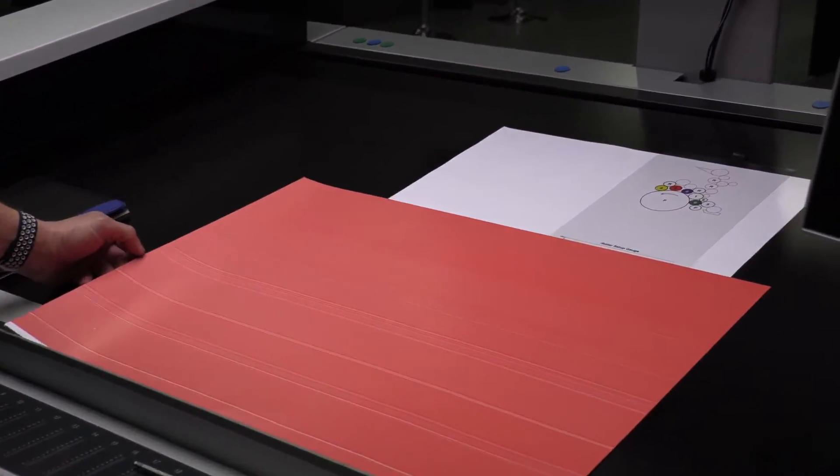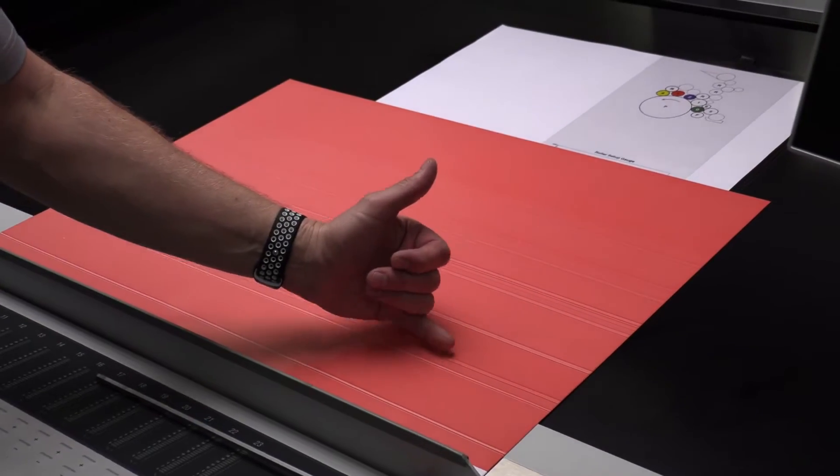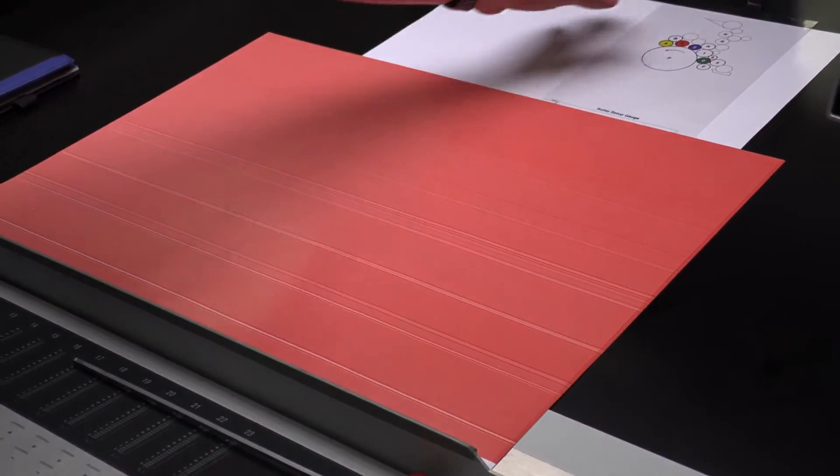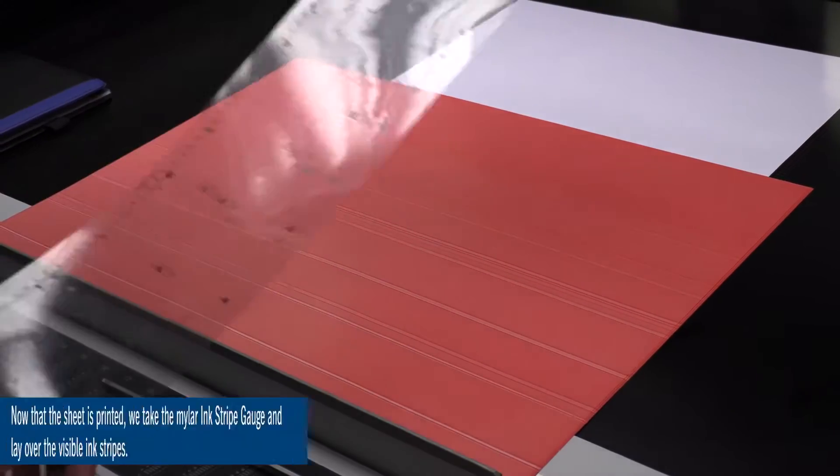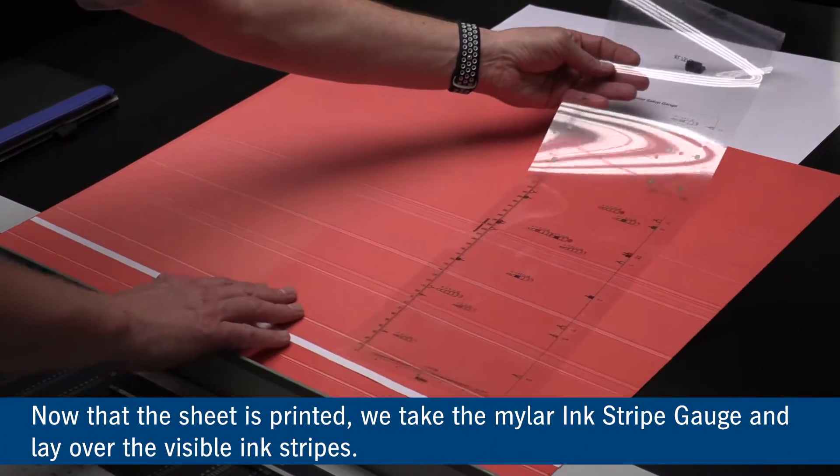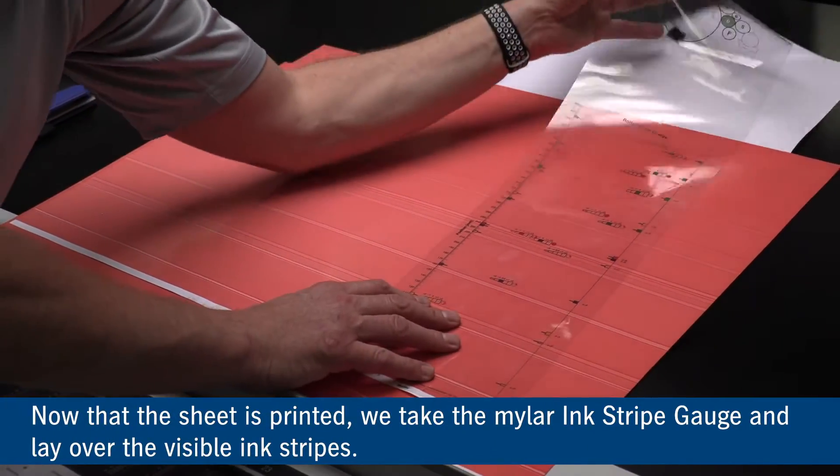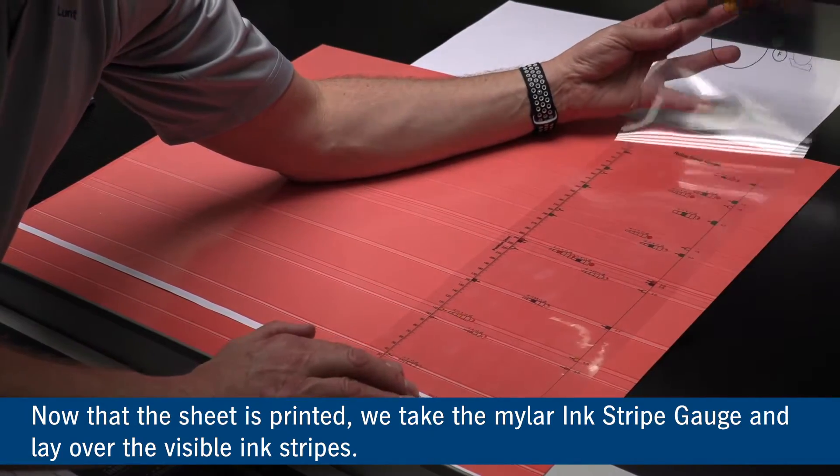We now have our printed sheet with our roller stripes on as you can see. With this mylar sheet we can now check the inking stripes on the actual plate.